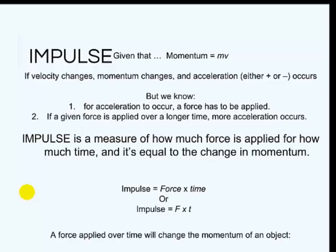So the formula for impulse is equal to F times T, force times time. A force applied over time will change the momentum of an object. Now just think about this: if we have something with a whole lot of momentum do we necessarily need a large force to stop it?